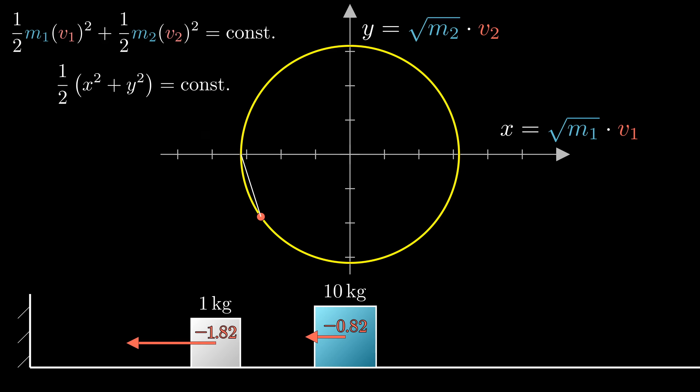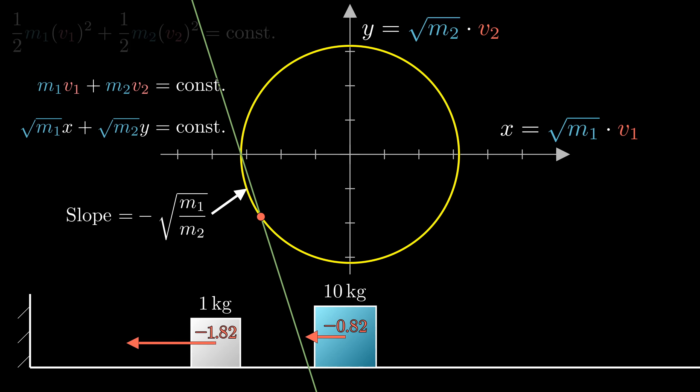Well, use the conservation of momentum. This tells us that before and after the collision, the value of m1 times v1 plus m2 times v2 must stay constant. In our rescaled coordinates, that looks like saying square root of m1 times x plus square root of m2 times y equals some constant. And that's the equation for a line, specifically a line with a slope of negative square root of m1 over m2. You might ask which specific line, and that depends on what the constant momentum is. But we know that it must pass through our first point, and that locks us into one choice.